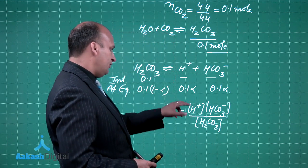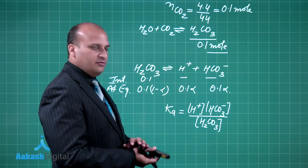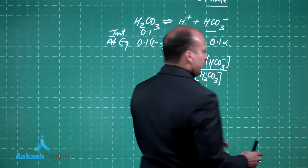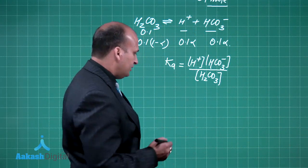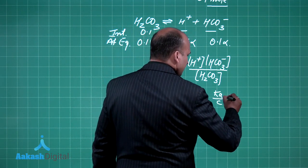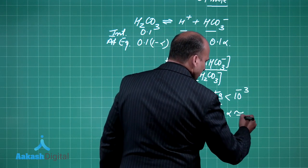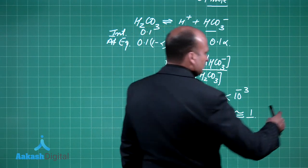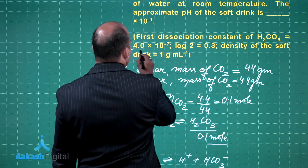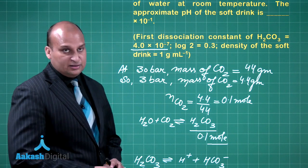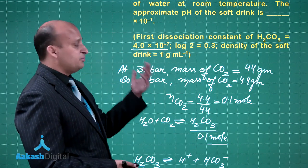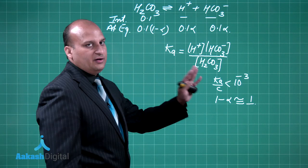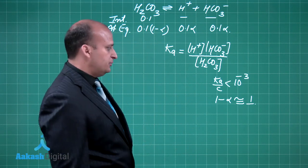We have to calculate the value of H+ which means we have to calculate the value of alpha. There is one thing which can help you in reducing your calculations, and that is if the value of Ka/C is less than 10 to the power minus 3, you can assume 1 minus alpha to be approximately equal to 1. If I put the values of Ka, the value of Ka is given to be 4 times 10 to the power minus 7. You divide this by 0.1, it will be 4 times 10 to the power minus 6. Is it less than 10 to the power minus 3? Yes. So we can neglect the value of alpha because it is very small. So we can write 1 minus alpha is approximately equal to 1.